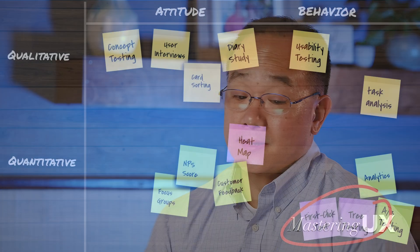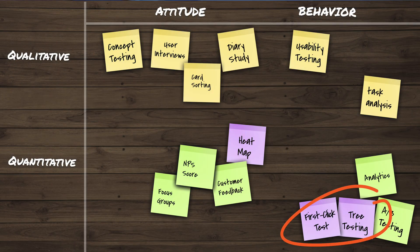One thing I want to point your attention to is that user experience professionals spend a lot of time looking at things in the quadrants of attitudinal and qualitative. This is definitely our specialty. But I do want to point your attention to the fact that there are some methods that are very good for quantitative behavioral studies. The business may bring in NPS scores, customer feedback, analytics, and A/B testing. And if you take a look at these purple sticky notes, UX also does things that are quantitative and behavioral-based.